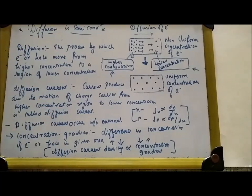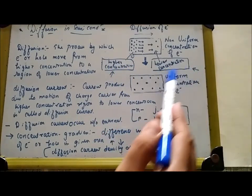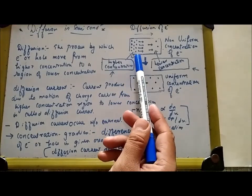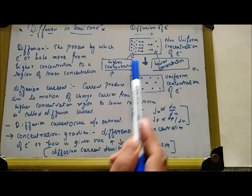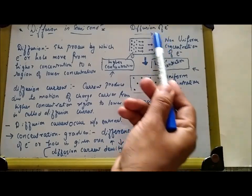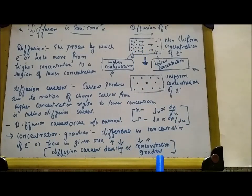To summarize: diffusion is the process by which electrons move from higher concentration to lower concentration to achieve a uniform concentration. Diffusion current is the current produced due to the motion of charge carriers — an important point is that it occurs without an external field. Concentration gradient is the difference in concentration of electrons in a given area; if it is high, current density is high, and if low, current density is low. The expressions for concentration gradient are given for both n-type and p-type semiconductors.